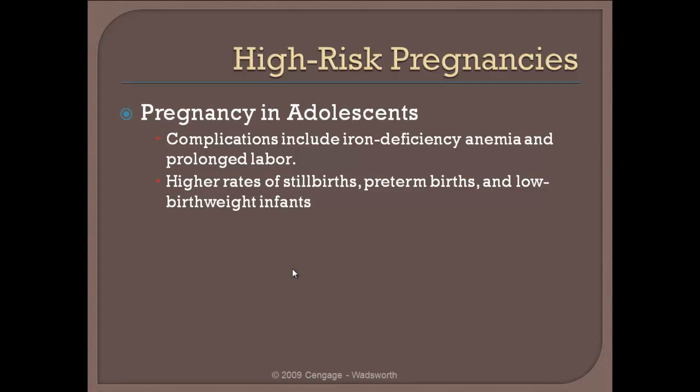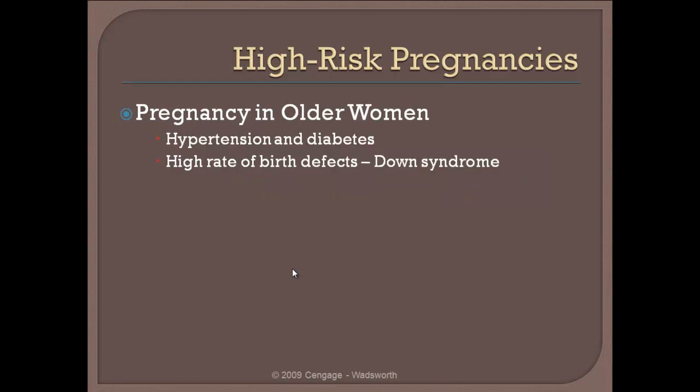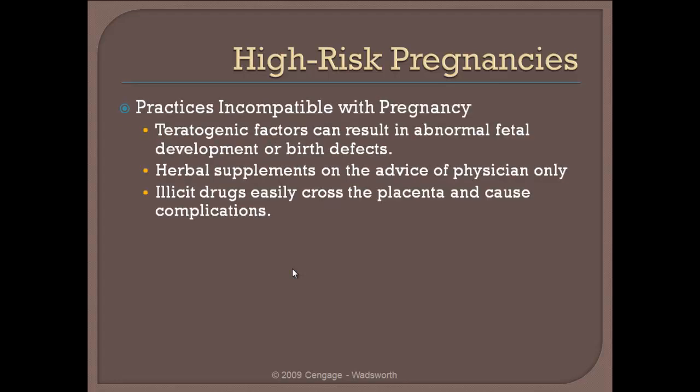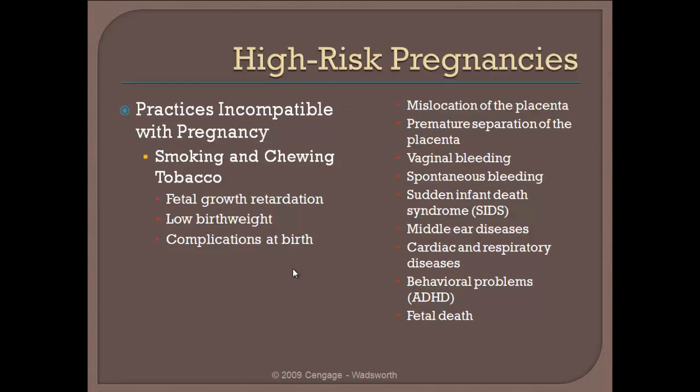Something else that causes high-risk pregnancies is simply having a baby at a young age. Adolescents oftentimes just don't have enough information to take good care of their bodies during pregnancy, and that results in preterm births and stillbirths. It's not unusual at all for adolescents to give birth to low birth weight infants. There's also a risk on the other end — older women's egg quality degrades, which dramatically increases the risk of Down syndrome. Smoking or using any type of tobacco product is going to retard fetal growth, and if the baby is lucky enough to make it, it will certainly be of low birth weight and can cause complications at birth.